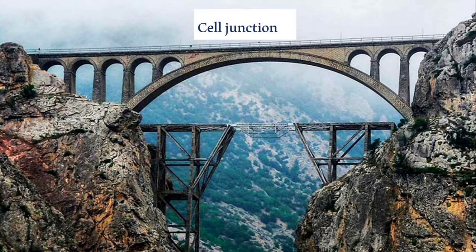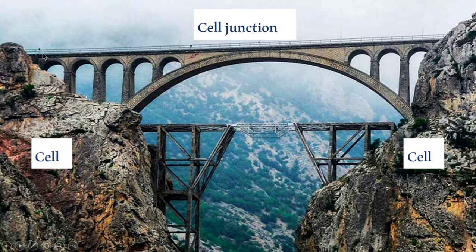Let us compare a cell junction to that of a bridge. The main purpose of a bridge is to connect two adjacent structures or places to each other. Similarly, a cell junction connects two cells that are adjacent to each other or between the cell and its extracellular matrix. So this is what a cell junction is and what its purpose is.